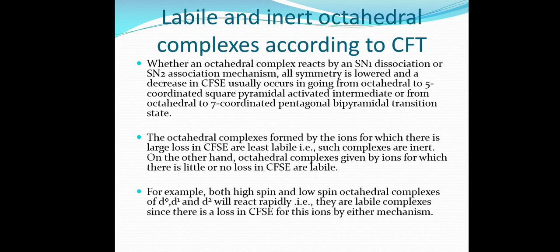For example, both high spin and low spin octahedral complexes of d⁰, d¹, and d² metal ions react rapidly — they are labile complexes — because there is a loss of CFSE for these ions by either the SN1 or SN2 mechanism. That is how we can understand lability and inertness from both the valence bond theory and crystal field theory approaches.